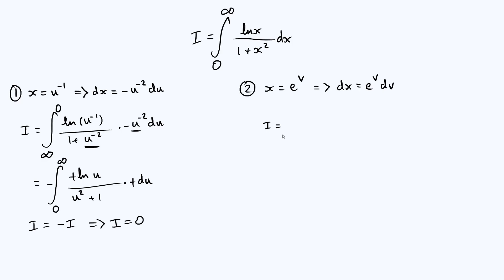i is going to be, again, let's think about the limits after we've dealt with the integrand itself. So ln x, by definition of x, is just going to be v. And 1 plus x squared is going to be 1 plus e to the 2v. If we square e to the v, we get e to the 2v. And dx, we are going to write e to the v dv. How about the limits?